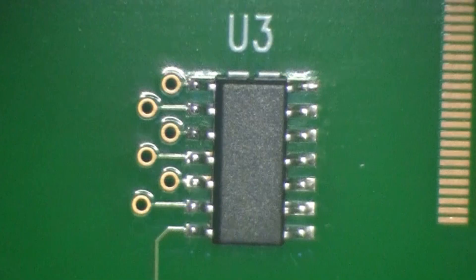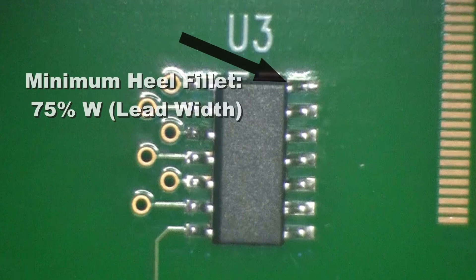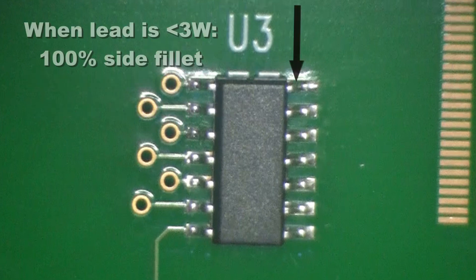IPC Class 3 criteria for high reliability and harsh environment assemblies states that the soldered connection must have, as a minimum, an end-joint fillet at least 75% the lead width. If the foot of the lead is less than 3 times the width, the connection must be soldered 100% along the sides of the leads.